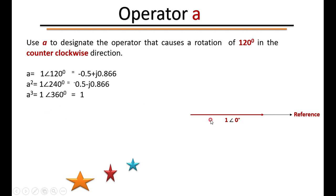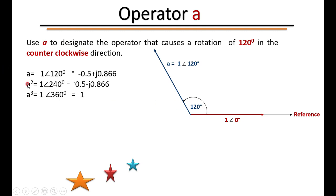Operating 'a' on a reference vector rotates it through 120 degrees in the anticlockwise direction. Operating 'a' on a vector 1∠0° gives 1∠120°. Operating 'a' twice — that is, applying a² — rotates the vector through a total angle of 240 degrees in the anticlockwise direction, so a²  gives 1∠240°.